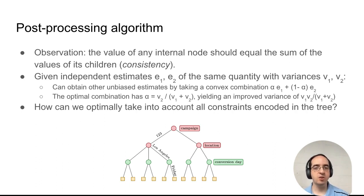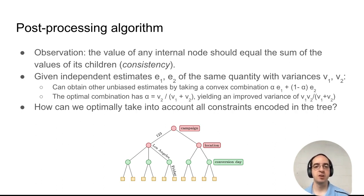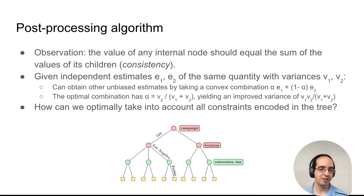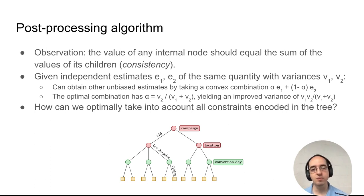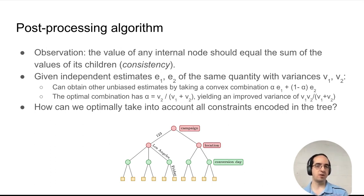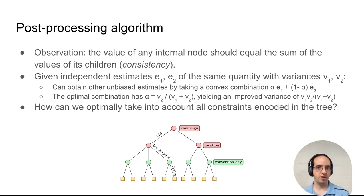When we ask interrelated queries, they sometimes have relationships between them. For example, the total number of clicks in Campaign 123 must equal the sum of the number of clicks of Campaign 123 in each region where the campaign was active. Or more generally, for every node in the tree, the value of that node should equal the sum of the values of its children.